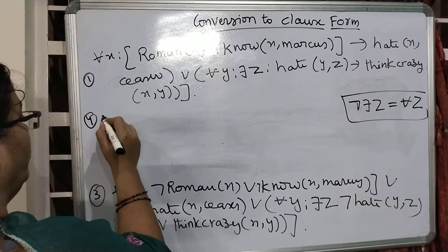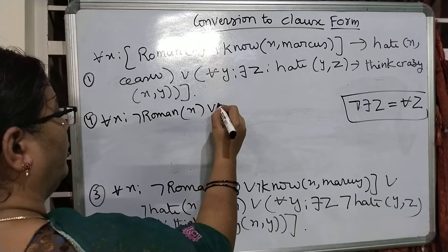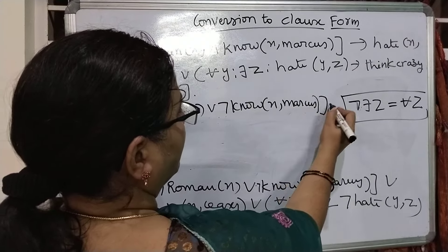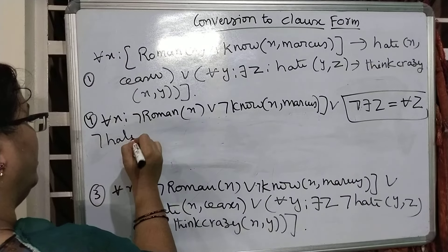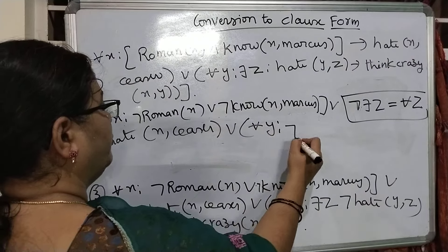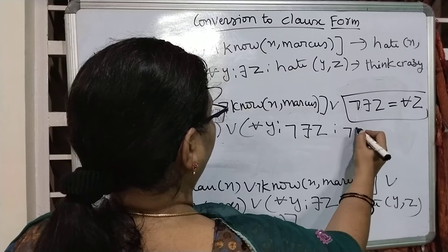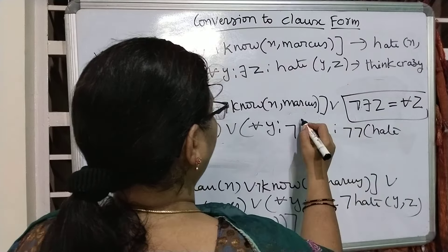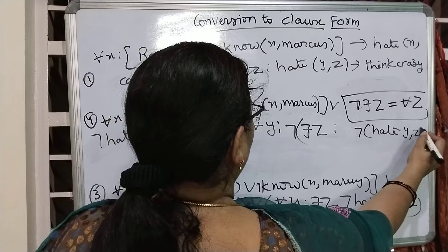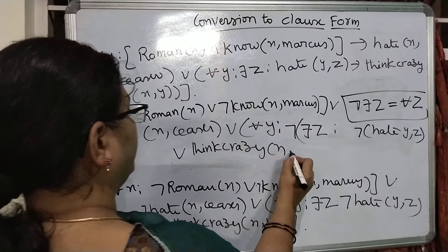Now writing based on step number 4: for all x, negation of Roman(x) or negation of no(x, Marcus) or negation of hate(x, Caesar) or for all y, negation of there exists z. And negation of negation of hate — the negation is applicable to the whole — so negation of hate(y, z) or thinkCrazy(x, y).